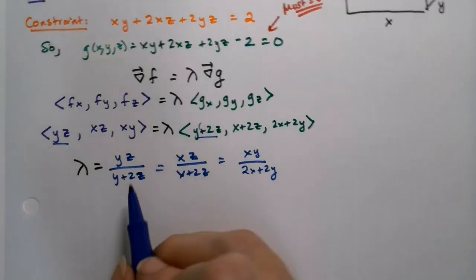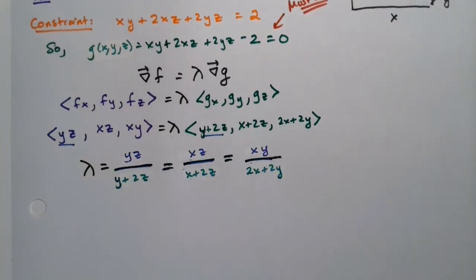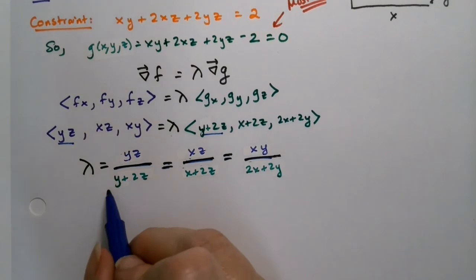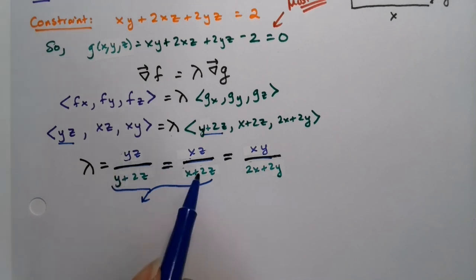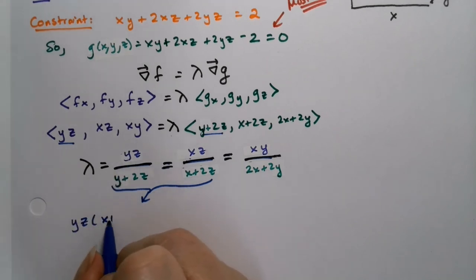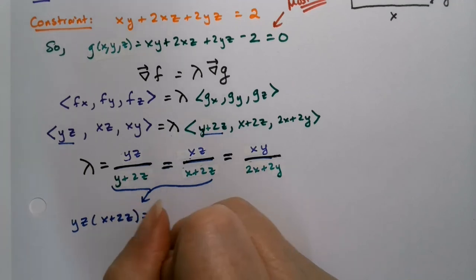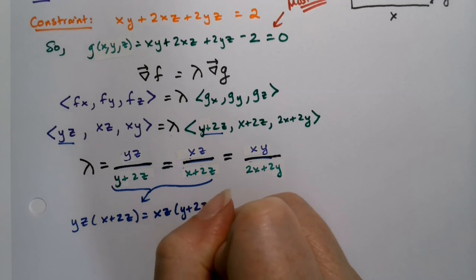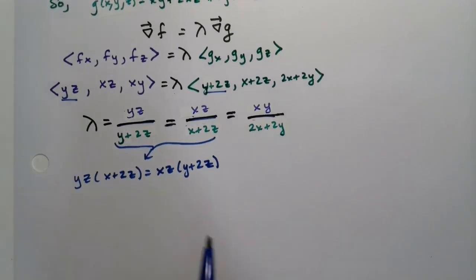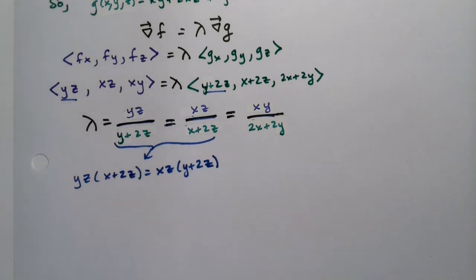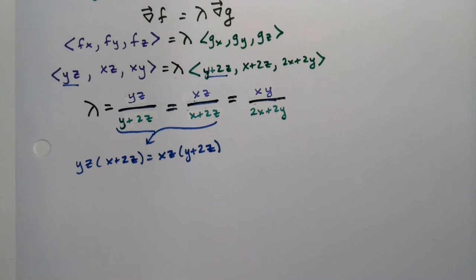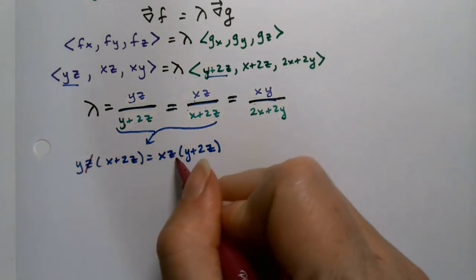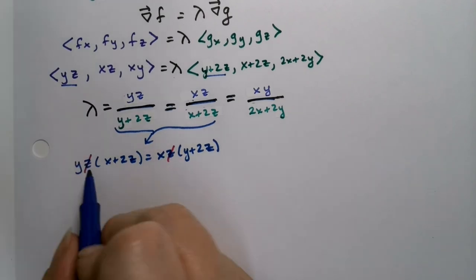So now we just take two of them. It doesn't matter which two. Take any two you like. I'm going to take these two, and I'll put them together. This means yz times x plus 2z is equal to xz times y plus 2z. Before I distribute, I can divide everything by z. If I divide both sides by z, these z's disappear. That's even easier.